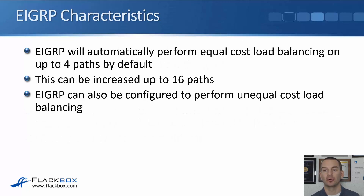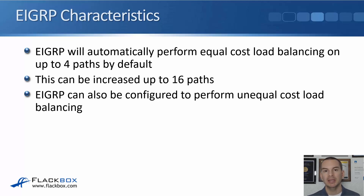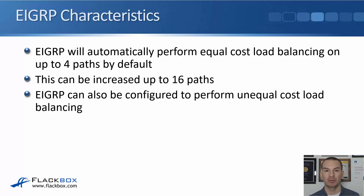EIGRP will automatically perform equal cost load balancing on up to four paths by default. You can manually increase that up to 16 paths if you want. EIGRP is also the only routing protocol that can do unequal cost load balancing. All other routing protocols can only load balance over equal cost paths, but EIGRP can be configured to load balance over paths with unequal metrics, though you have to manually configure that.